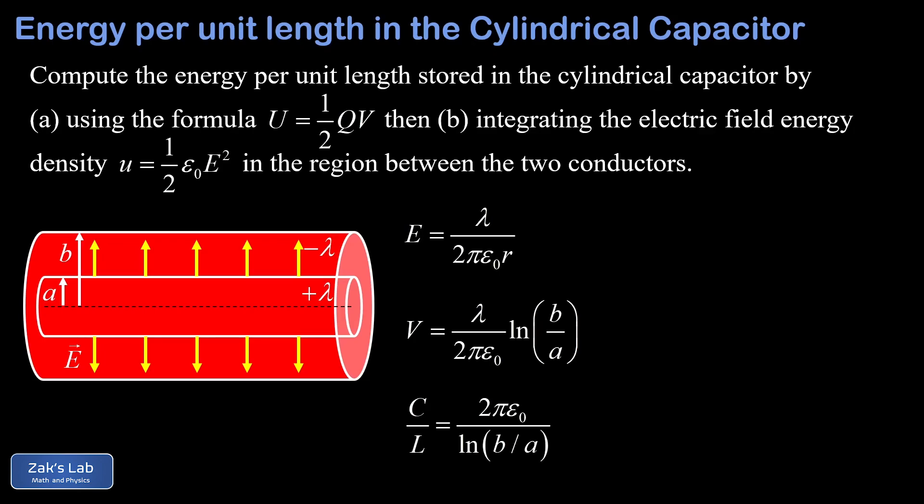In this video, our goal is to compute the energy per unit length stored in this capacitor. Our first approach is to use a basic formula for energy stored in a capacitor. I usually remember this formula as 1 half cv squared. But when we replace capacitance with its definition as q over v, one of those v's cancels and we get this alternative version of the formula, 1 half q times v.